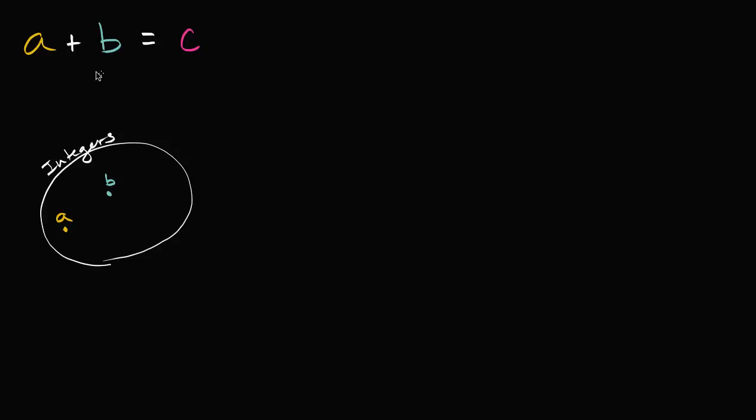Well, when you thought about it, you might have come up with some cases. Well, what if A and B are both one? Then for sure, C is going to be two, and C is going to be an integer. Well, is that always going to be the case? Well, it is. There are ways to prove it. I'm not gonna go into it now.